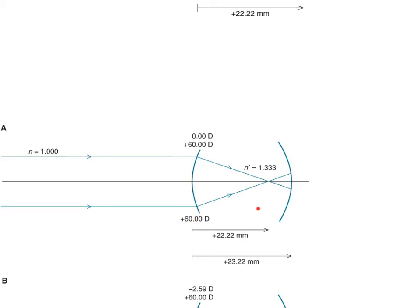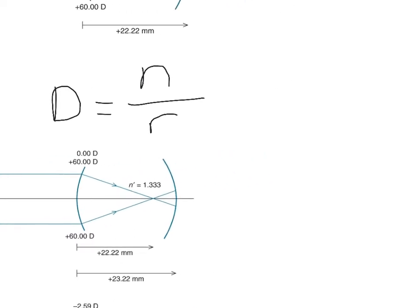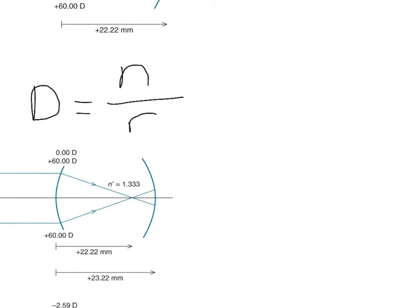You can actually calculate a person's eyeglass prescription from this reduced eye model. What you do is find the power needed to put the focal point on the retina. The power D in diopters needed is the index of refraction divided by the radius. In this case, the radius of the eye is longer — the radius is 23.22 millimeters — so that goes on the bottom.